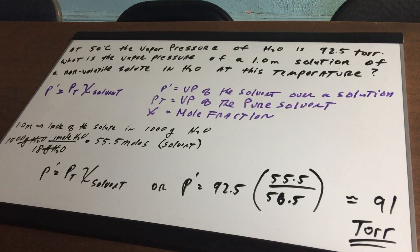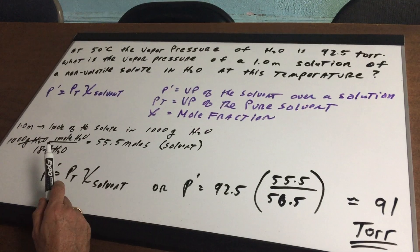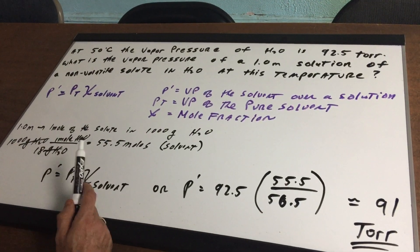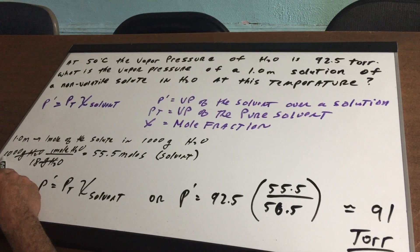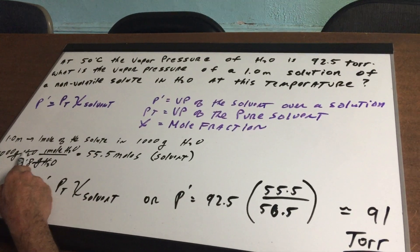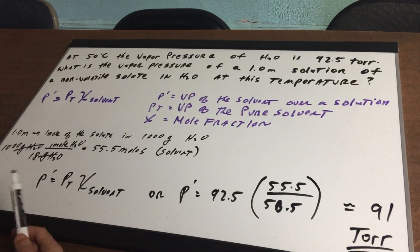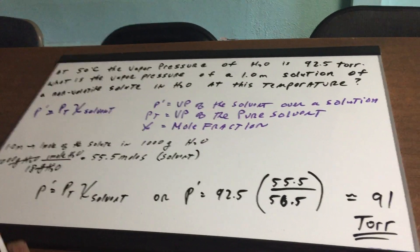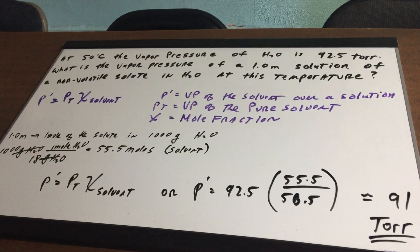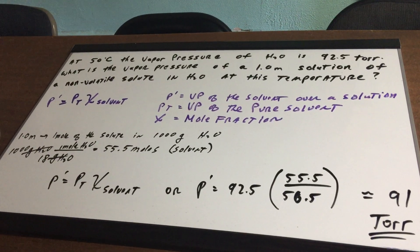Now, what does 1.0 molal mean? It means there's one mole in a kilogram of water or a thousand grams of water. Now, what I'm going to do is to take a thousand grams and convert it into moles, because I need to get the mole fraction of the water, because that's the solvent. Now, I'm going to show you a little trick that I teach my students.